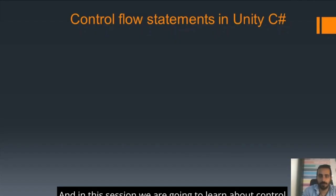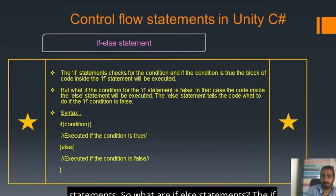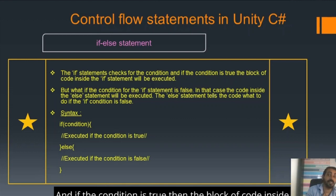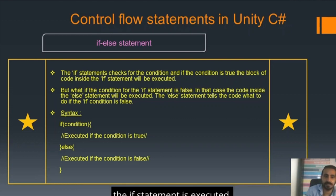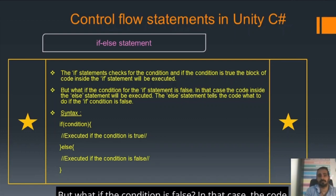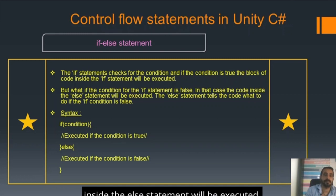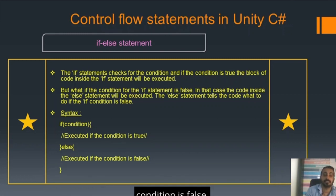We are going to learn about control flow statements in Unity C-sharp. The if statement checks for the condition, and if the condition is true, then the block of code inside the if statement is executed. But what if the condition is false? In that case, the code inside the else statement will be executed. The else statement tells the code what to do if the condition is false.